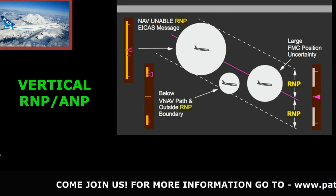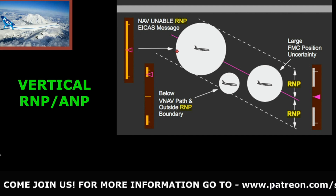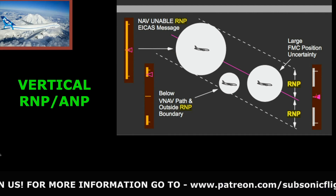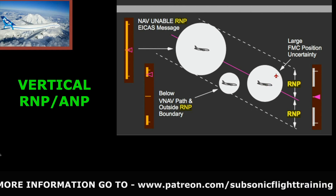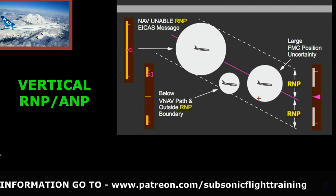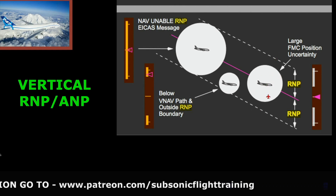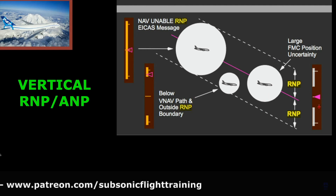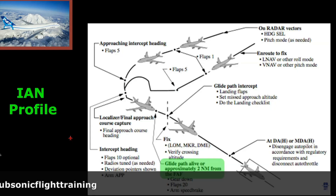You'll get an unable RNP message as well. In this case we're right on the path and the ANP is within the RNP, so everything is really good here — that's what we want to see.